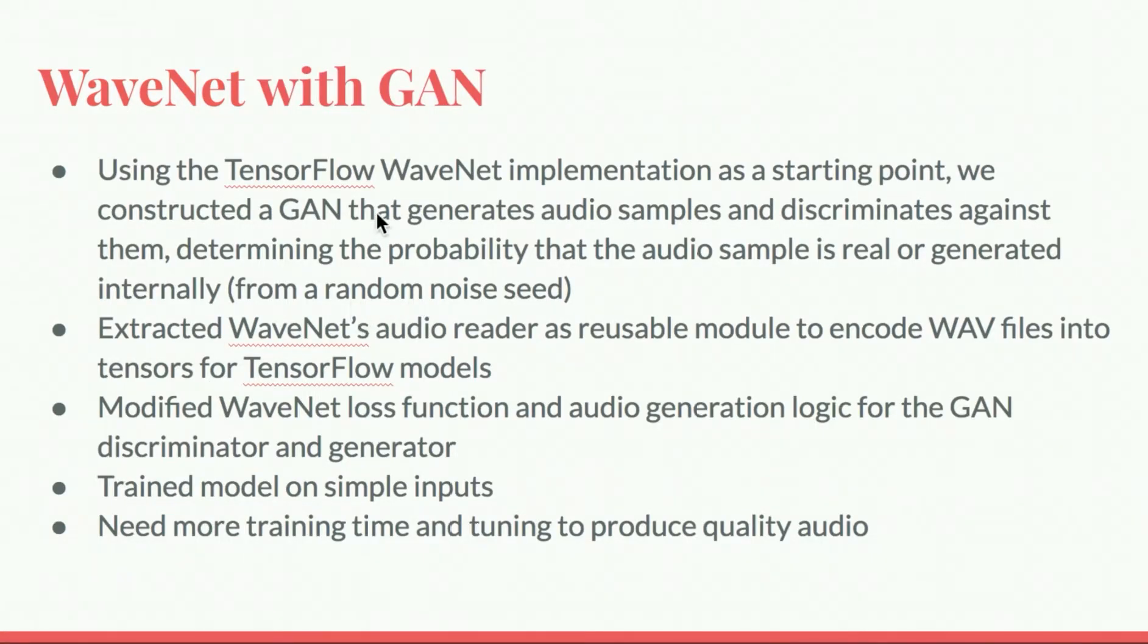Using the TensorFlow WaveNet implementation as a starting point, we constructed a GAN that generates audio samples and discriminates against them and determines the probability that the audio sample is real or generated internally from a random noise seed. We extracted WaveNet's audio reader to be a reusable module that encodes raw wave files into tensors for TensorFlow networks. This audio reader uses one-hot encoding to transform input waveforms into tensors that have 32 quantization channels. We modified the WaveNet loss function and its audio generation logic to be useful in the GAN discriminator and generator networks. We trained this model on very simple inputs, but due to slow performance, found we need a lot more training time and tuning to produce any quality audio.